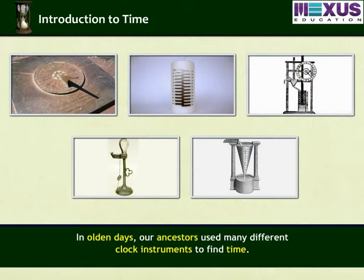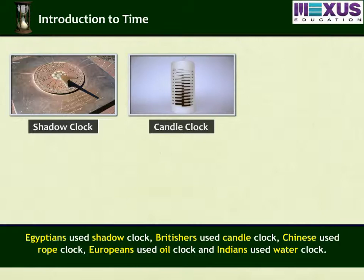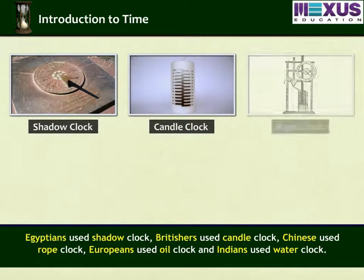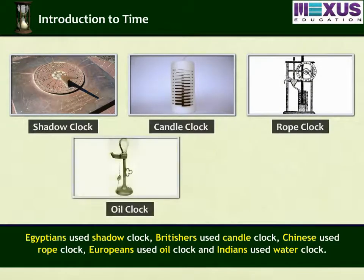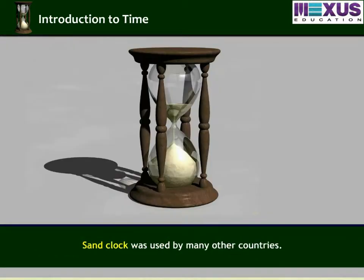In olden days, our ancestors used many different clock instruments to find time. Egyptians used a shadow clock, Britishers used a candle clock, Chinese used a rope clock, Europeans used an oil clock, Indians used a water clock, and a sand clock was used by many other countries.